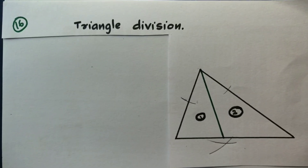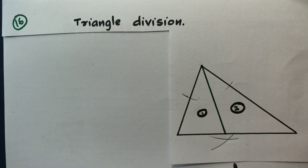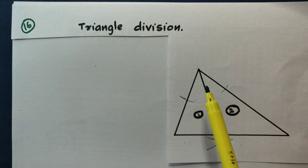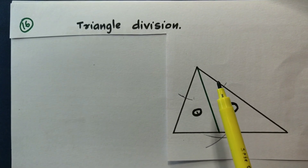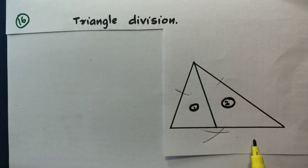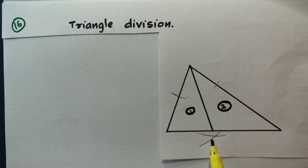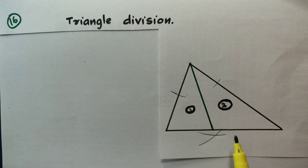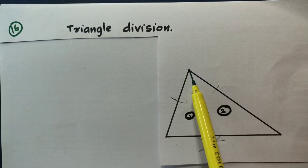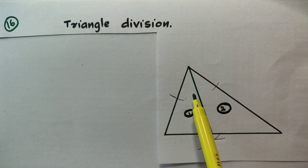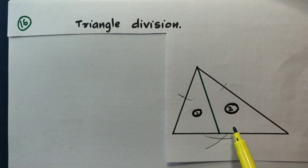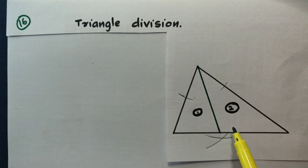Now let's look at the theorem: a line from the vertex of a triangle divides the opposite side and the area of the triangle in the same ratio. The two angles are equal — that is the bisector. We are not equal here in the general case, but when bisected, the two are equal to each other.